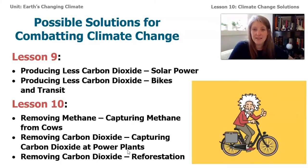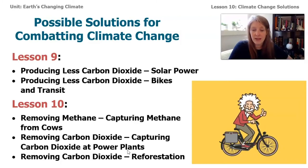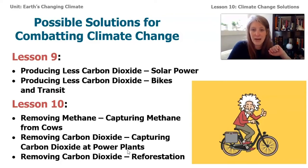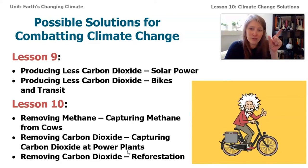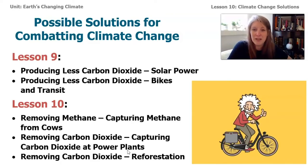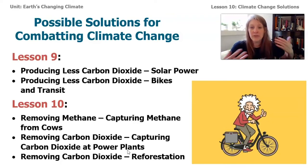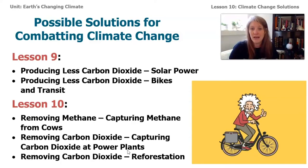Today in lesson 10, we will be looking at three new ideas for reducing the effect of climate change on our planet. The first is about capturing methane from cows, and also capturing carbon dioxide at power plants. The last one is about something called reforestation — you can see the word forest in the middle of that big word. Reforestation is about planting trees and having new forests grow where they've been cut down in the past.